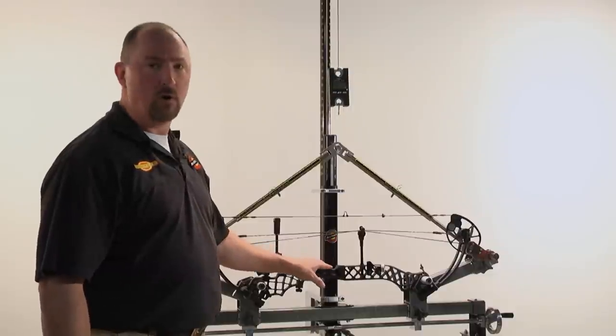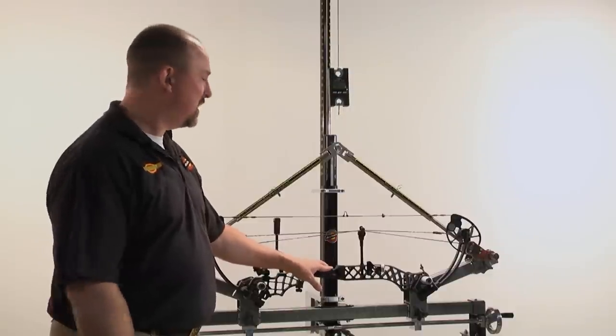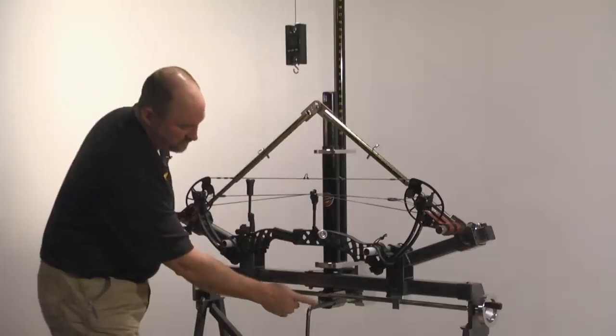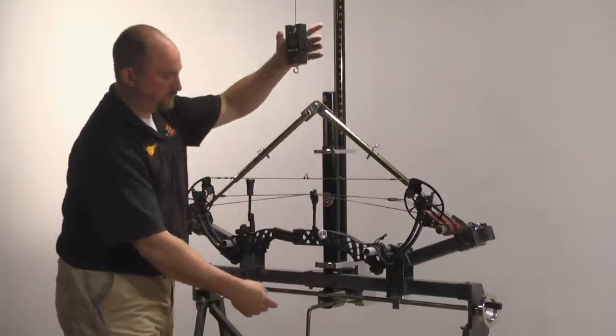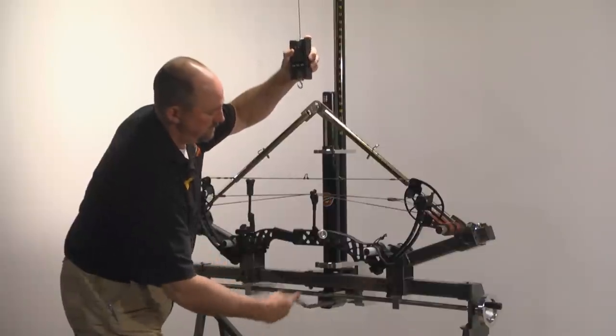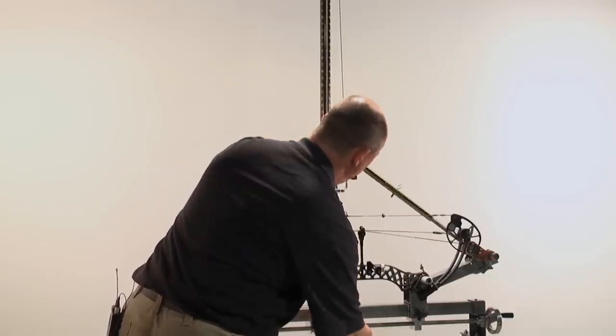Here we have a bow already mounted to the ProPress, so to operate the ProDraw we're just going to change the handle from the jack, move it over to the gearbox of the ProDraw and lower it so we can hook it on the loop.